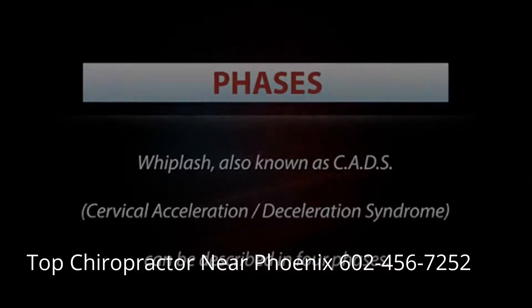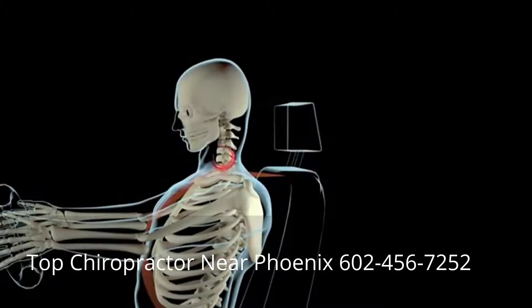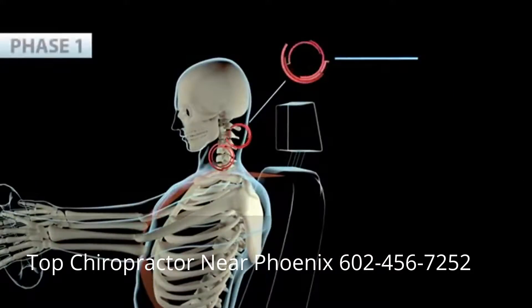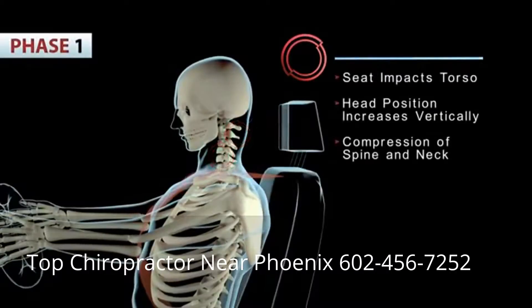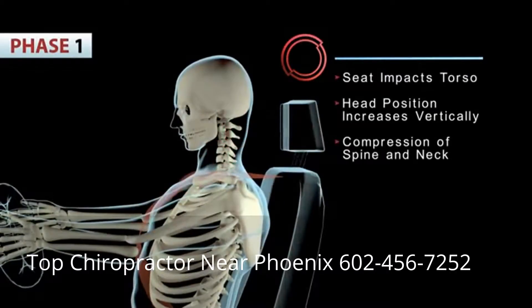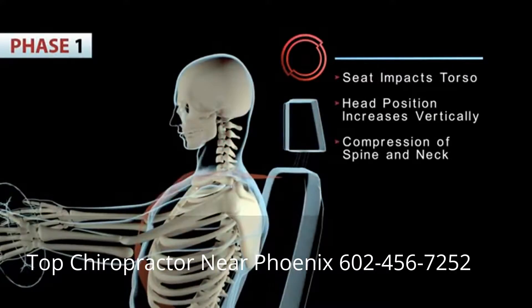In phase one, the seat impacts the torso, then the head position increases vertically and an abnormal S-curve develops in the cervical spine.